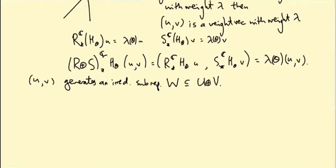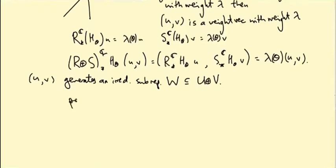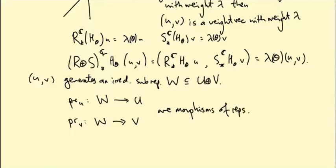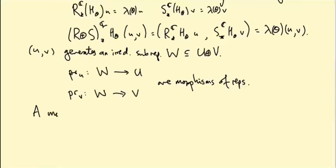So now the claim is that the projection maps onto U and onto V are morphisms of representations. So I'll leave that as an exercise for you to check. See if you can remember what the definition of a morphism is.